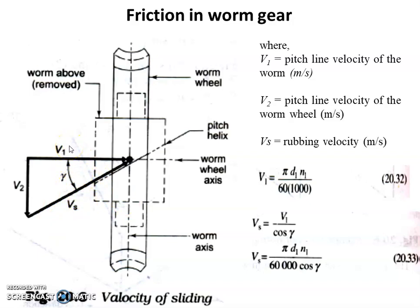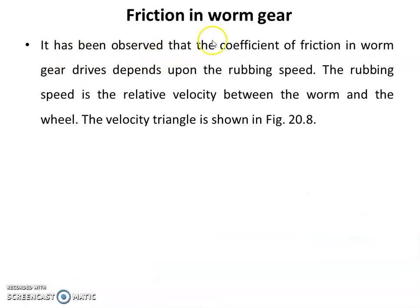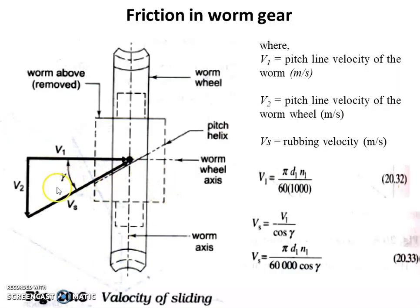The angle between V1 and VS is gamma, which is the lead angle. The rubbing speed is the relative velocity between worm and worm wheel. This rubbing speed, the resultant of V1 and V2, is taken into consideration in order to accommodate the effect of friction in worm gear drives. More friction occurs between worm and worm wheel compared to other gear drives.